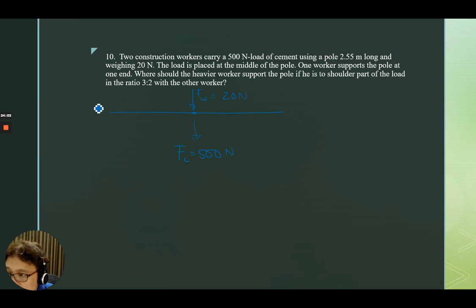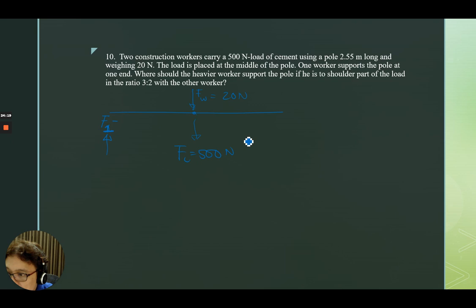Where should the heavier worker support the pole if he is to shoulder part of the load in the ratio 3 to 2 with the other worker? The lighter worker supports at one end — let's call this F1. The question is: what is the location of F2, the heavier worker's support point?